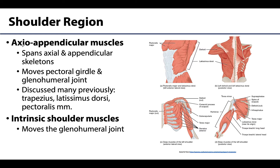One of the more complex regions of the upper limb is the shoulder region. You will have muscles that are larger and span in terms of attachment sites both the axial as well as the appendicular skeletons, and these are referred to as the axial appendicular muscles. We've discussed many of these in previous sessions such as the trapezius, the latissimus dorsi, and the pectoralis muscles as we were dissecting the areas of their proximal attachment — the superficial back or the anterior thorax. But their distal attachments will be on either the scapula or the humerus, thus affecting the actions of the pectoral girdle or shoulder joint.